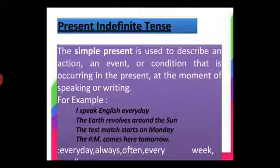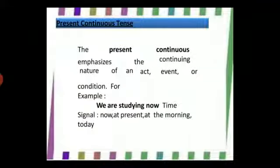Present continuous tense emphasizes the continuing nature of an action, event, or condition. We use present continuous tense to describe an action that is happening right now. We use it to talk about temporary situations, and also to talk about something that is happening nowadays.